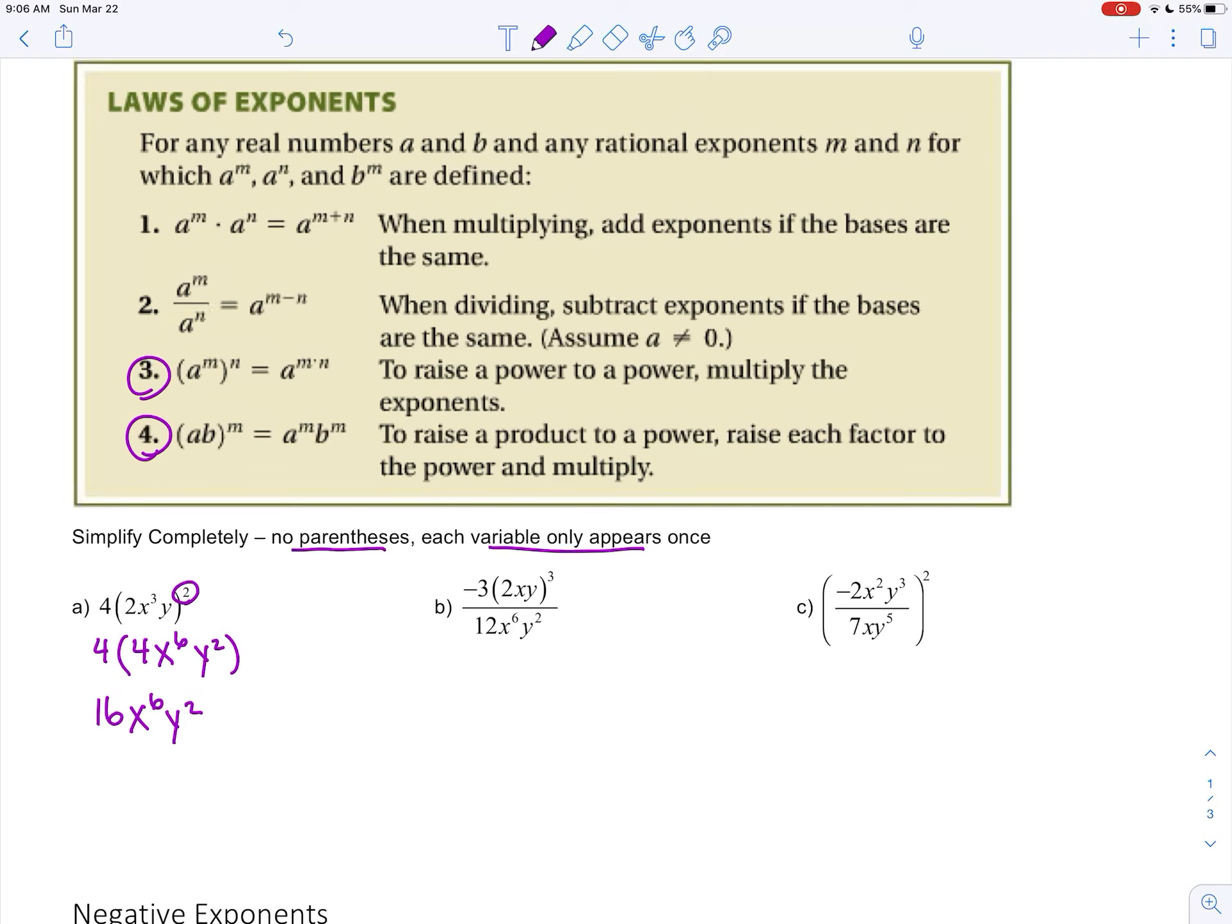For part B, a little more complicated, a few things going on. First of all we can reduce this fraction here. 3 twelfths is 1 fourth. And also I'm going to apply this exponent of 3 to everything inside the parentheses. I'm not going to write the 1, we don't really need to write a 1. 2 cubed is 8.